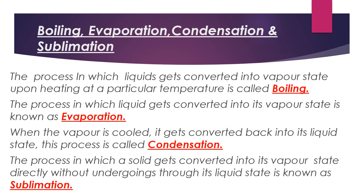Evaporation is the process in which liquids get converted into the vapor state, and it takes place continuously at room temperature. When this vapor is cooled back, it gets converted into the liquid state — this process is known as condensation. When vapor condenses, there is no change in chemical properties; only the change of state takes place, and no new substance is formed. Therefore, all these processes — evaporation and condensation — are physical changes.